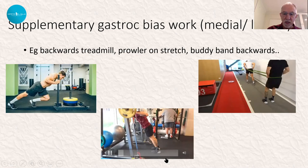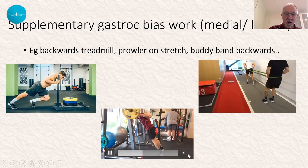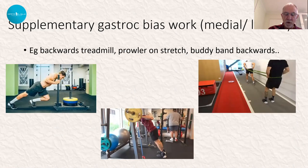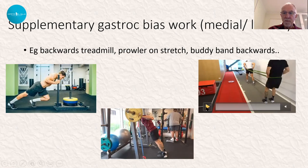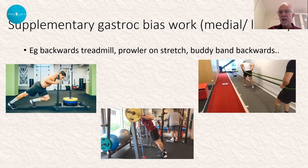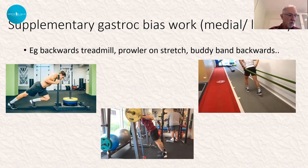We can supplement this with work to get to the gastrocnemius insertion: backwards on a treadmill, prowler on stretch, or a lowering and lengthening in a Smith machine — lowering at length. Of all the options we worked through, this seemed our best option in terms of control. Another option is using a buddy walking backwards — you can go neutral, then bias it more to the lateral side or to the medial side as well.